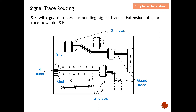To minimize crosstalk, you can implement a ground trace on each side of the signal trace. You can also add vias to further enhance protection against crosstalk. Instead of a noise source coupling to the victim, the crosstalk mainly goes to the ground trace or to the vias, and this minimizes the EMI issue. This is how we can incorporate ground traces to minimize coupling and crosstalk effects.